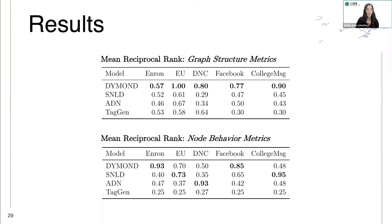Here we show the mean reciprocal rank. A higher value is better. In the first table for graph structure, our model Diamond outperforms the baselines. Then in the second table for node behavior, our model performs the best on the Enron emails and Facebook data sets. SNLD performs better on the EU emails data set, but Diamond is a very close second, and it also performs the best on the college message data set.